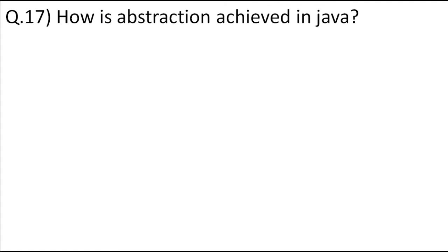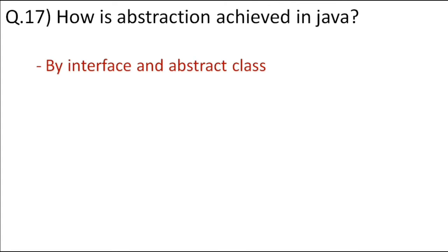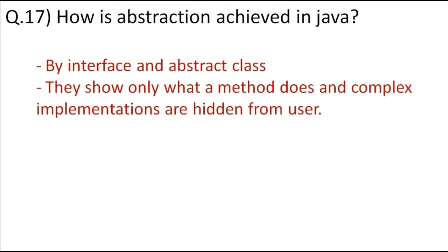How is abstraction achieved in Java? Abstraction is achieved using interface and abstract class. We do not write the implementation in the interface or abstract class — we just show what the methods do. The complexities of the implementation are written in the class that implements the interface. So we are hiding the complexities and only showing what a particular method does.